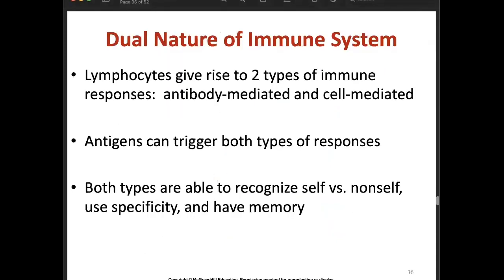In the dual nature of the immune system, lymphocytes give rise to two types of immune responses: antibody-mediated and cell-mediated. Antigens can trigger both types of responses. Both types are able to recognize self versus non-self, use specificity, and have memory.